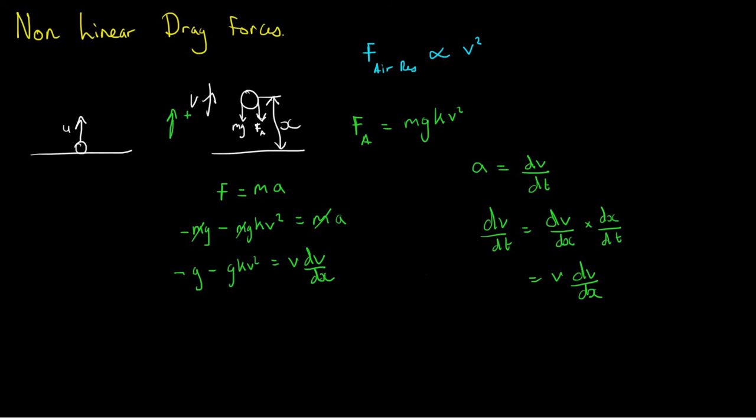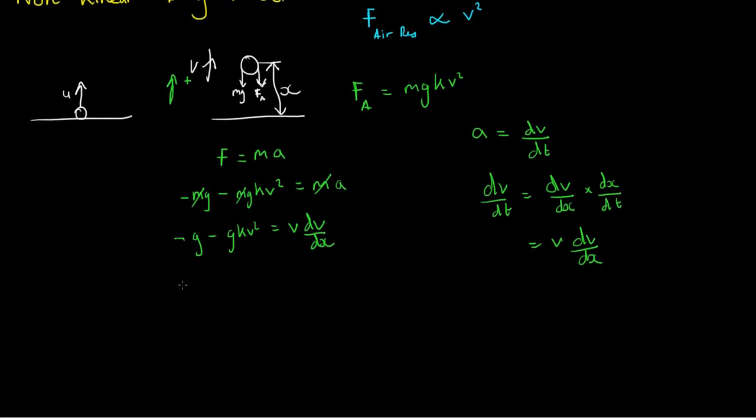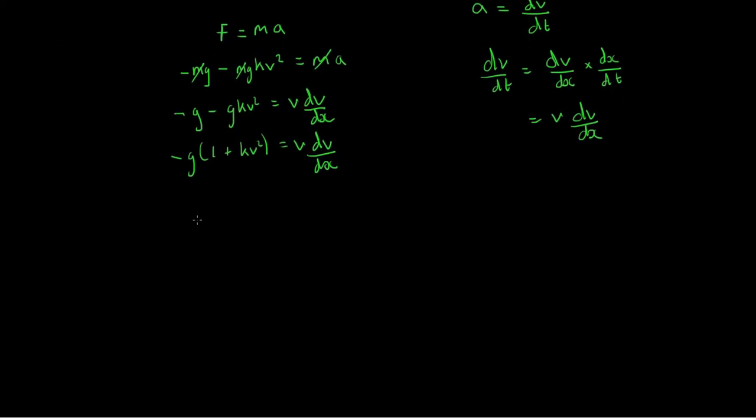On the left hand side if I just collect terms and take a minus g out, we end up with 1 plus kv squared equal to v dv by dx. And now I'm just going to separate the variables with this. I take dx terms to the left and keep the dv terms on the right. And if we do that we get minus g dx is equal to v divided by 1 plus kv squared dv, just separating the variables, times and cross by dx and dividing by the 1 plus kv squared.